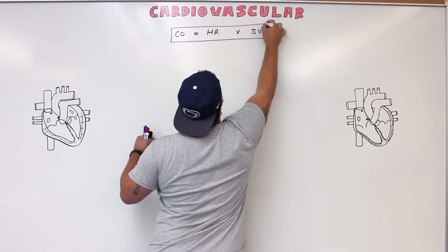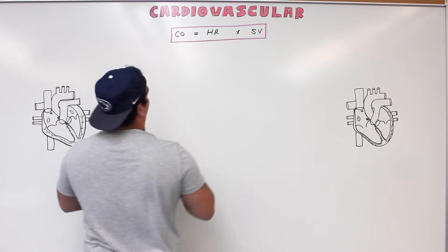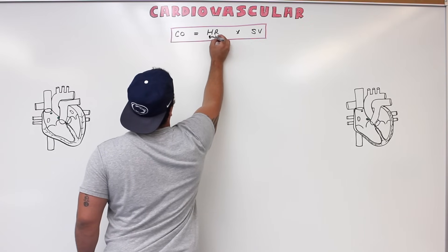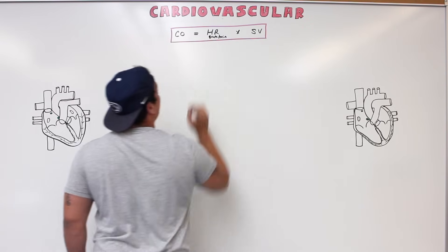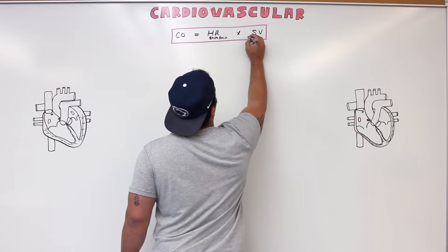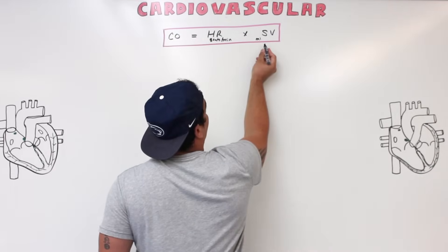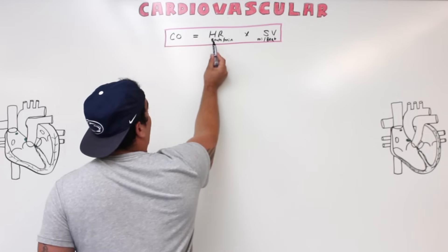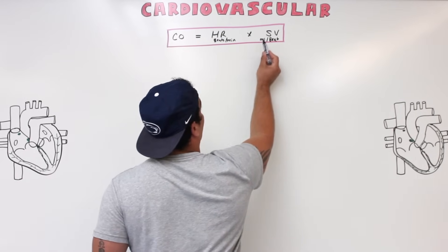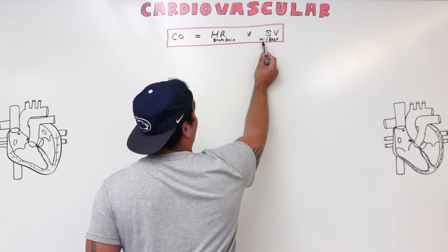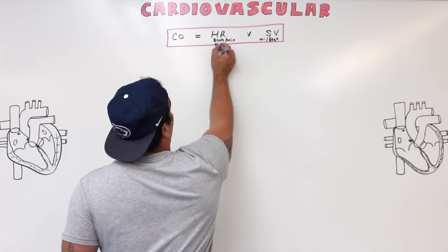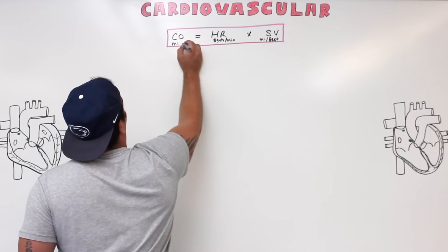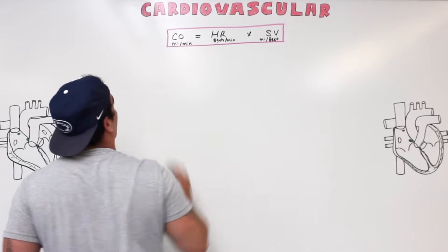Let's look at the units. Heart rate is in beats per minute, while stroke volume is the total volume of blood that the ventricles are ejecting for every one beat — measured in milliliters. So when you multiply beats per minute by milliliters per beat, the beats cancel out and you're left with milliliters per minute.